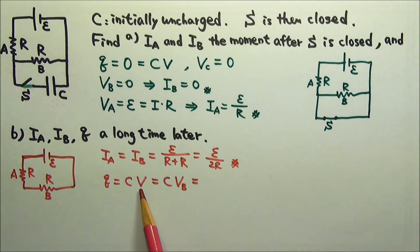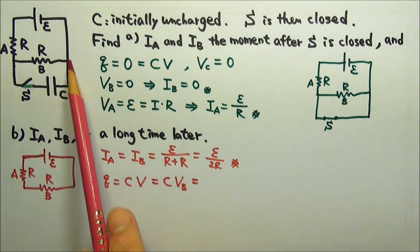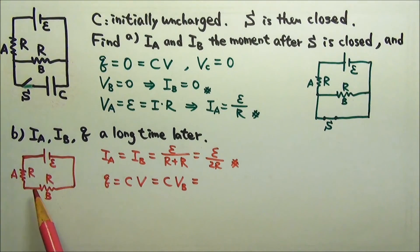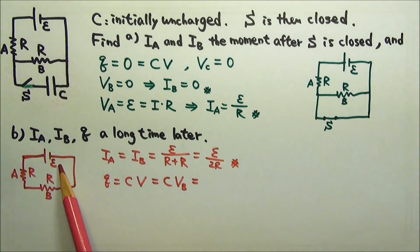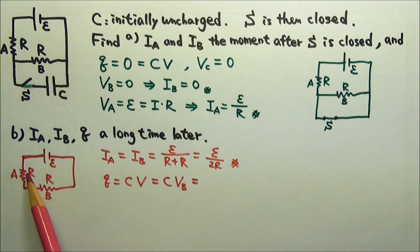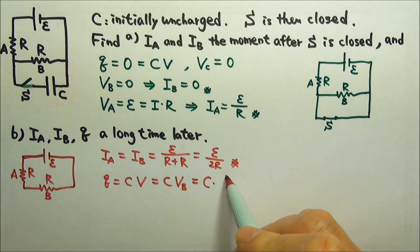So this is C times V, C times the voltage across resistor B. Because A and B are effectively in series, they share the EMF E. Since A and B are identical, they share the EMF equally. So the voltage across resistor B must be half the E. Therefore, the charge on the capacitor must be half C times E.